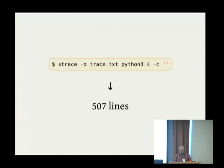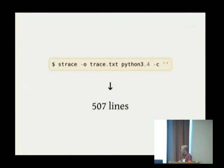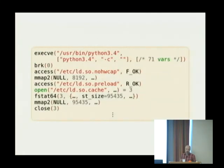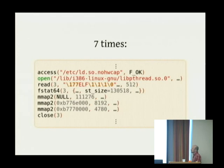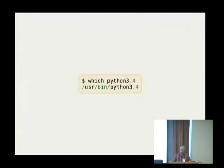If we now turn from /bin/true to running Python on a completely empty script — dash-c lets you provide Python with the program to run right in the command line — a Python program that does nothing runs 507 different system calls. It starts exactly the same as /bin/true did as the C runtime starts up and checks its loader settings. You then see not just libc, but seven different shared libraries getting loaded up, opened, memory mapped, and then closed, leaving the memory maps in place.